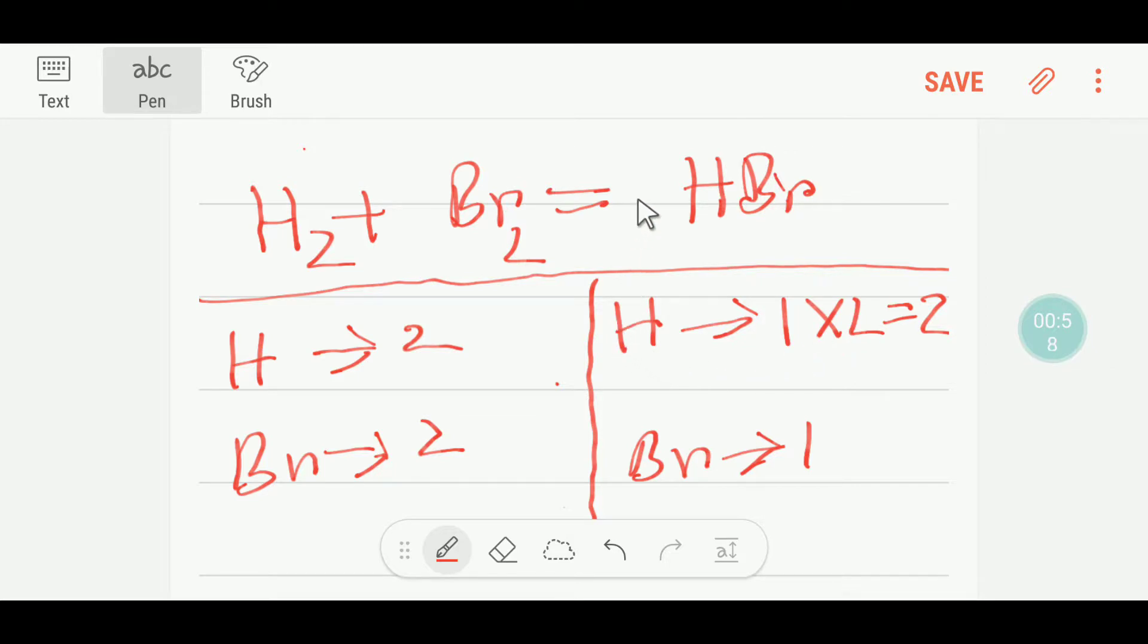So I have to put here two. If I put here two, the number of bromine will be changed - that is, we're getting two bromine here, so I can write here two. So our bromine is balanced, our hydrogen is balanced, so this reaction is balanced.